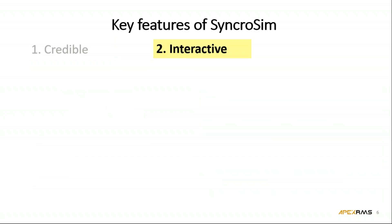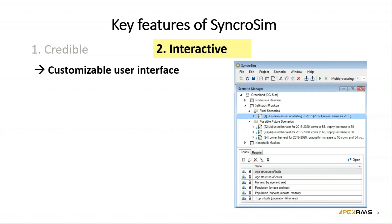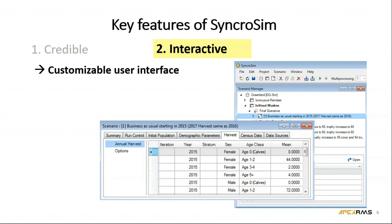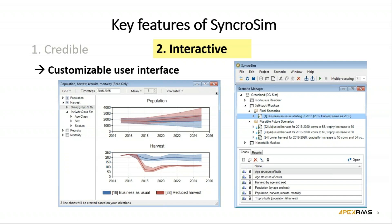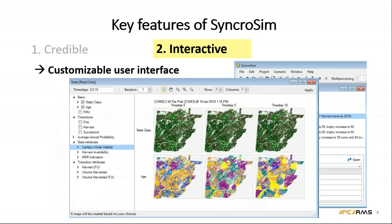The second key feature is that SynchroSim makes state-of-the-art scientific models interactive, which allows delivery of the models themselves to decision makers rather than just static outputs. All SynchroSim models have access to the same built-in customizable user interface familiar from STSim — it gives you the ability to view and edit scenarios of model inputs and display both graphs and maps of outputs. Work is underway this year to also make models available to non-technical users through a simplified web interface.